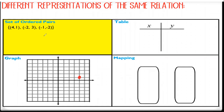The next point is negative two, three — it means I'm going to go back two and then up three. And the next point is negative one, negative two — I'm going to go back one and down two.